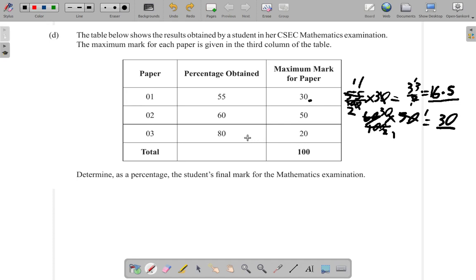Now for paper 3, she got 80% and the marks available were 20 marks. So 80% of 20. 20 into 20 goes 1 time, 20 into 100 goes 5.